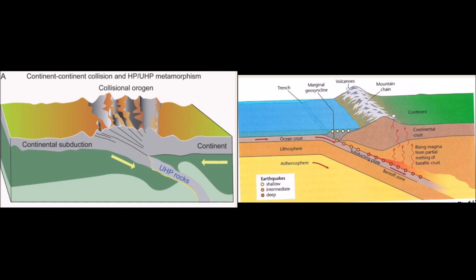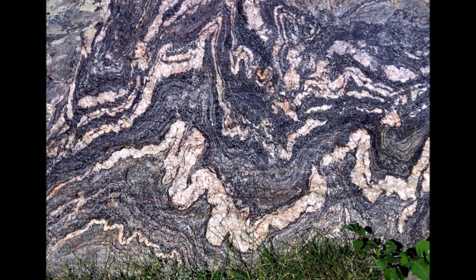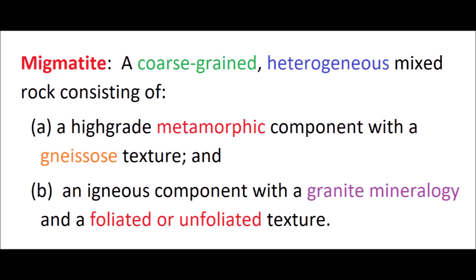Now let's move to the next question about migmatites — an MSQ, two-mark question. What are migmatites? The definition tells us it is a coarse-grained, heterogeneous mixed rock consisting of a high-grade metamorphic component with a gneissic texture and an igneous component with granitic mineralogy, which may be foliated or unfoliated.